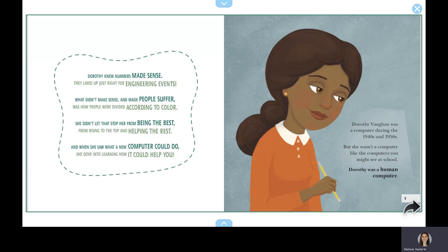Dorothy knew numbers made sense. They lined up just right for engineering events. What didn't make sense and made people suffer was how people were divided according to color. She didn't let that stop her from being the best, from rising to the top and helping the rest. And when she saw what a new computer could do, she dove into learning how it could help you.